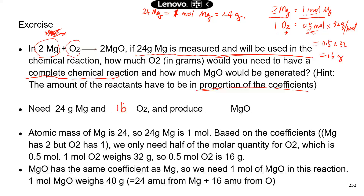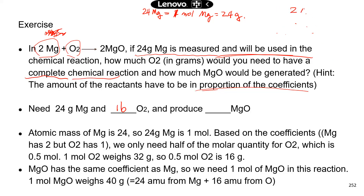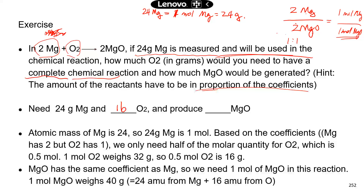Now how much magnesium oxide is produced? In the chemical reaction, we have two magnesium and two magnesium oxide, so they are in a 1-to-1 ratio. If you have one mole of magnesium, you will generate one mole of magnesium oxide. The weight for one mole of magnesium oxide is 24 plus 16, which is 40 grams.